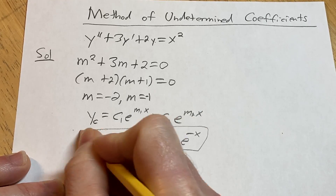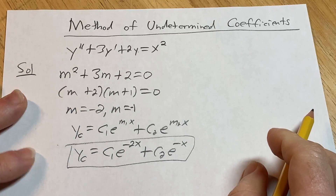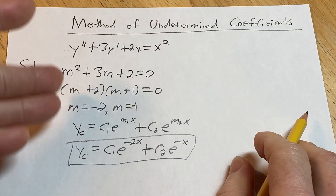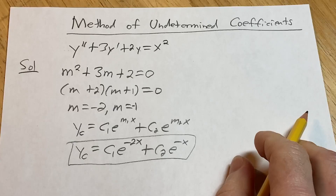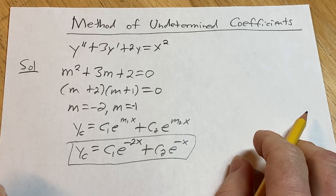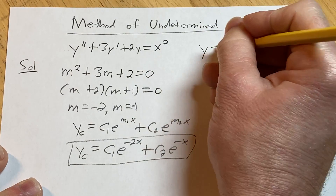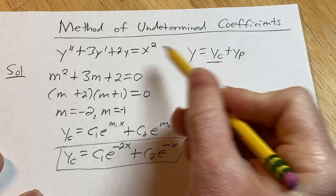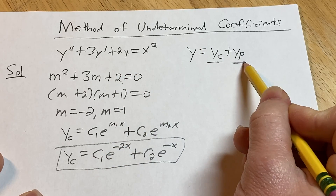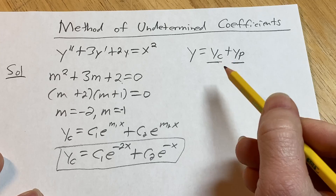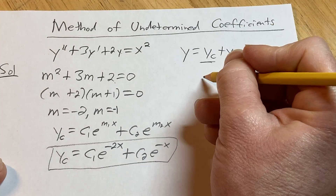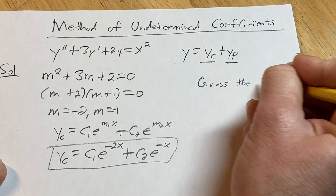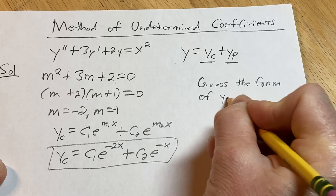That's the complementary function — the solution to the associated homogeneous equation. If the right-hand side were zero, this would be the final answer. The final answer to the full problem is y equals y sub c plus y sub p — the complementary function plus the particular solution. Now we need to find the particular solution y sub p.